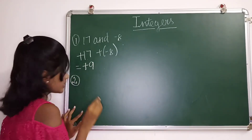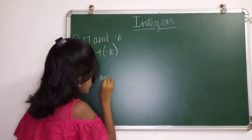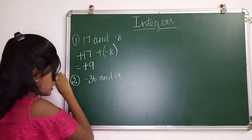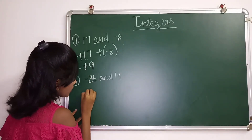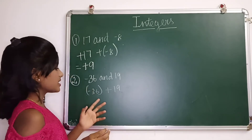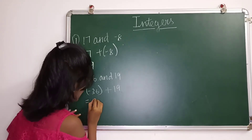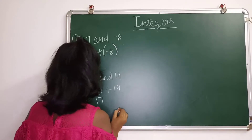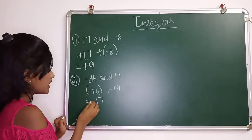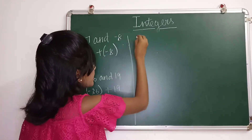The next sum is minus 36 plus 19. Again, the signs are not the same, so we have to subtract them. 36 minus 19 is 17. Since 36 is greater and carries the minus sign, the answer is minus 17.